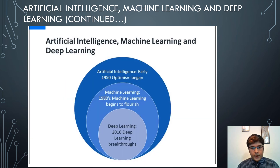This slide clearly shows the difference between artificial intelligence, machine learning, and deep learning — deep learning is a subset of machine learning, which is a subset of artificial intelligence. The figure also shows the exact year when research on each of these began.